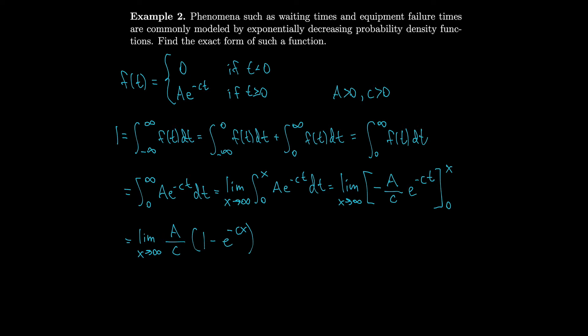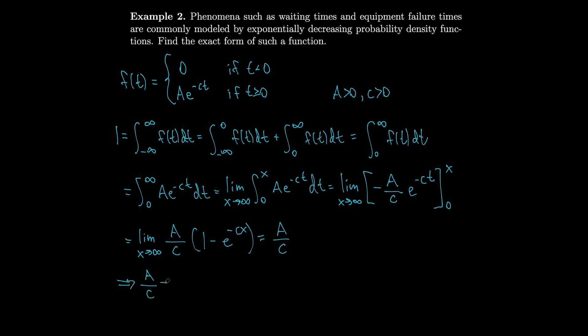Following the chain of equal signs back, we started with 1, so 1 must equal a over c. This implies a over c equals 1, which means a must equal c.